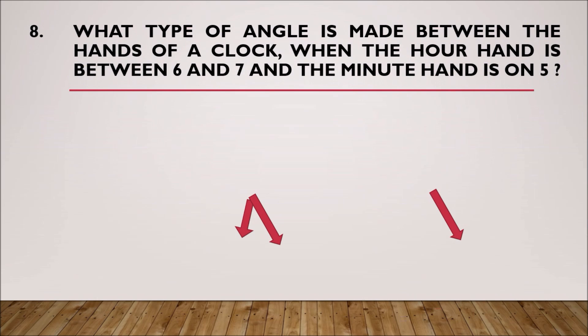Question number 8: What type of angle is made between the hands of a clock where the hour hand is between 6 and 7, and the minute hand is on 5?